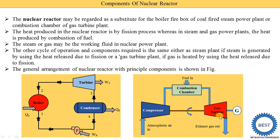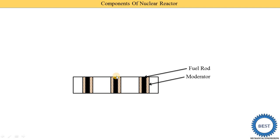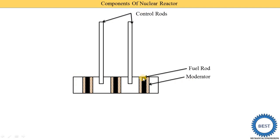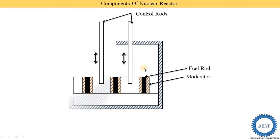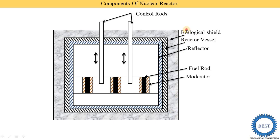The general arrangement of a nuclear reactor with its principal components is shown in this figure. Using this animation: here you can see the nuclear fuel rod, which is surrounded by the moderator — this is called the core of the nuclear reactor. Between the fuel rods, control rods are provided which are able to move up and down. After that is the reflector, then the reactor vessel, then the biological shield. Coolant enters from one side and exits from the other.